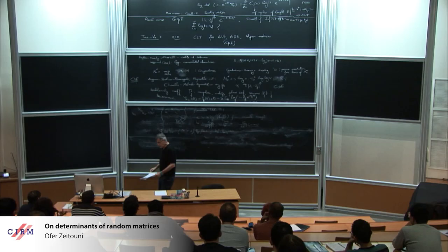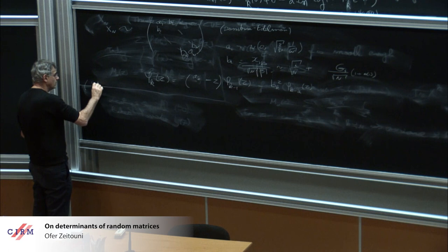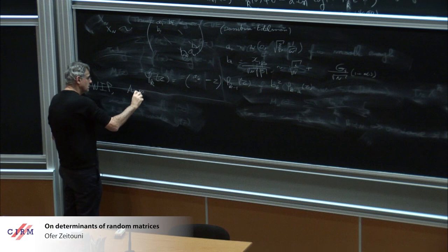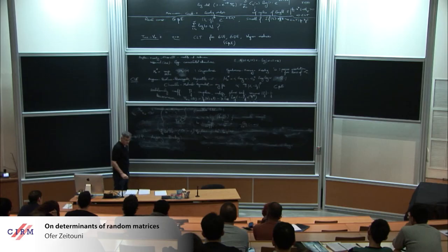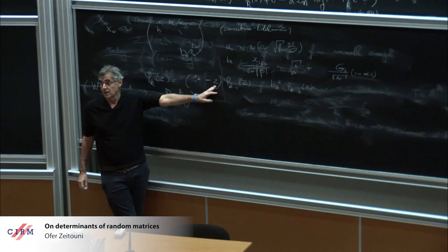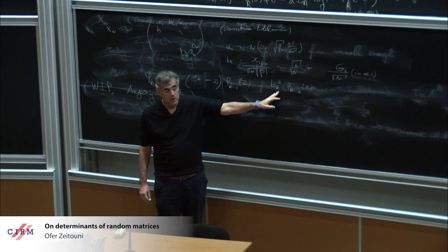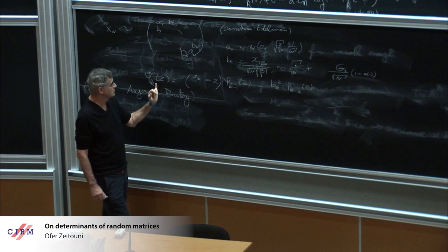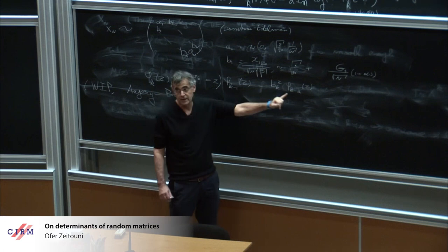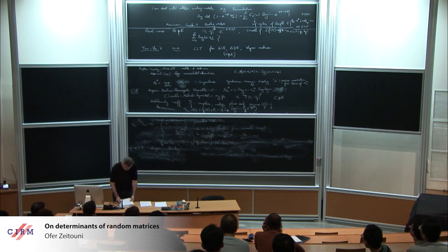From now on, everything I'm telling you is work in progress, joint work with Fanny Augeri who's here and Raphael Boutet. What is nice about that is you can write a recursion for the determinant directly. The determinant itself is an orthogonal polynomial. The recursion looks like phi_k of z is a_k minus z times phi_{k-1} of z minus b_k squared times phi_{k-2} of z.